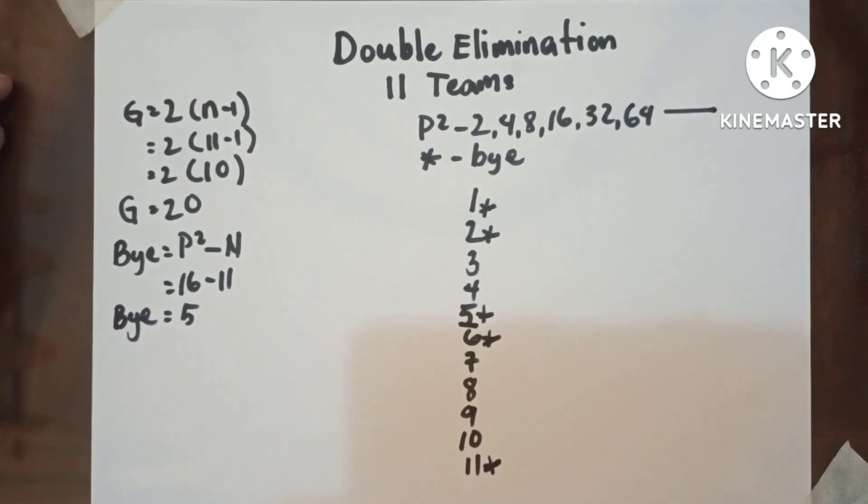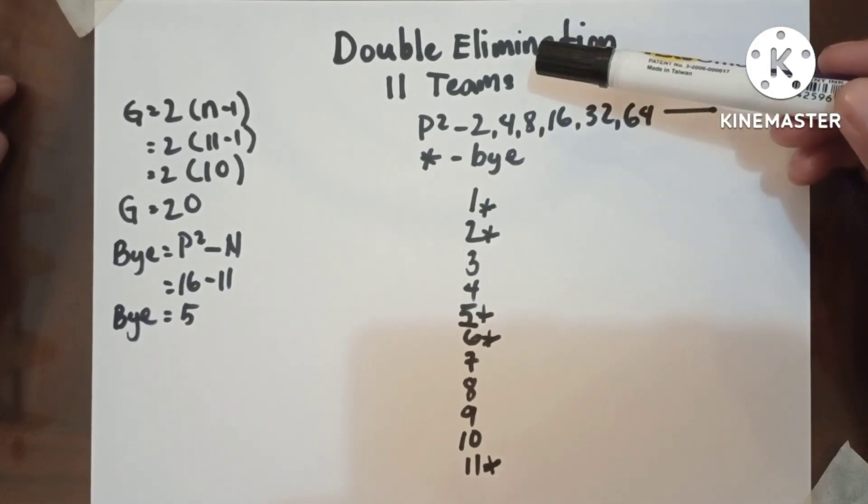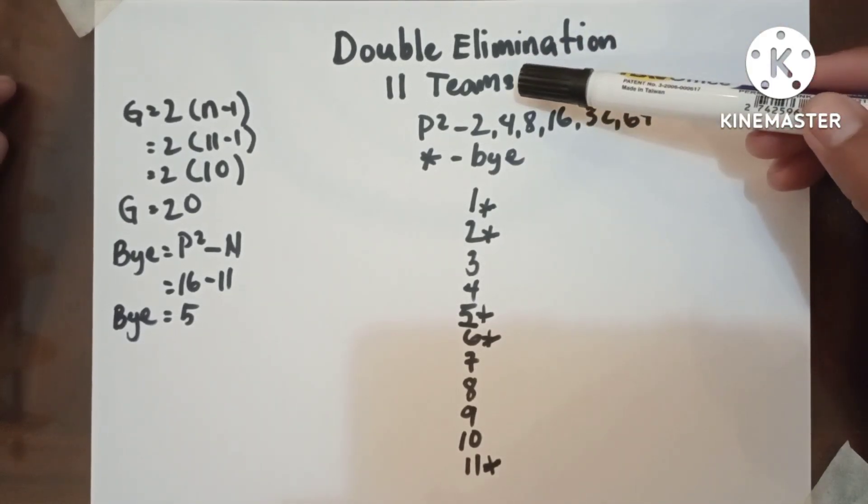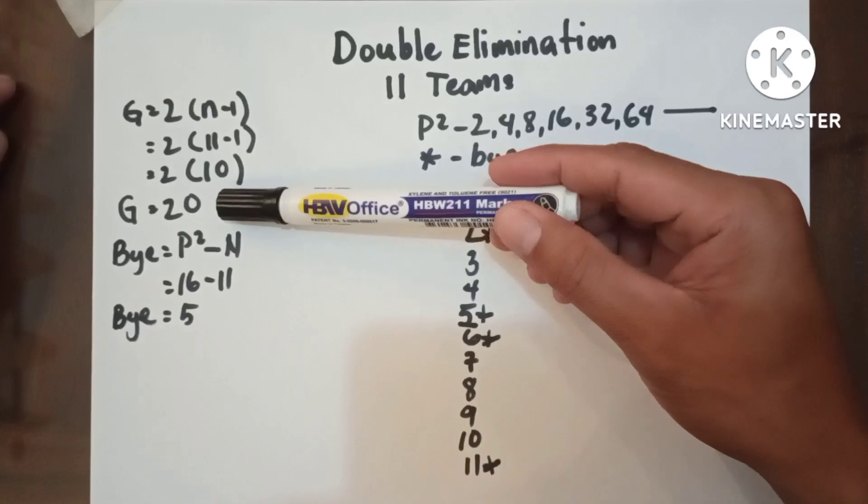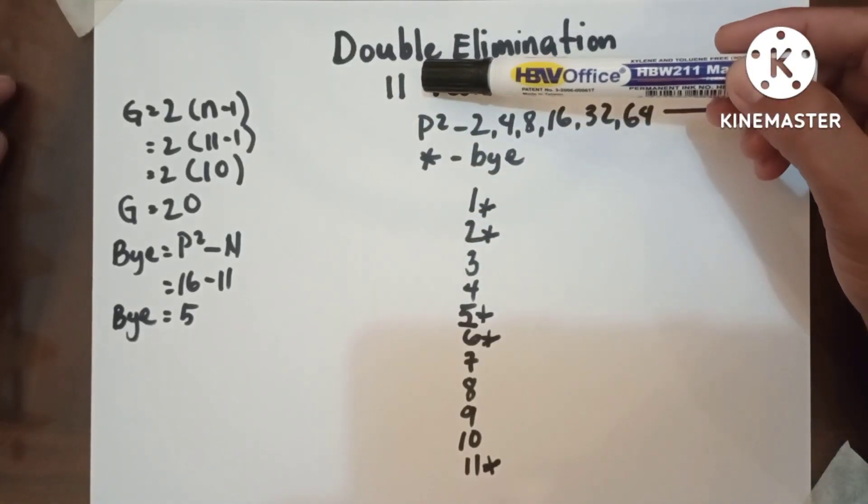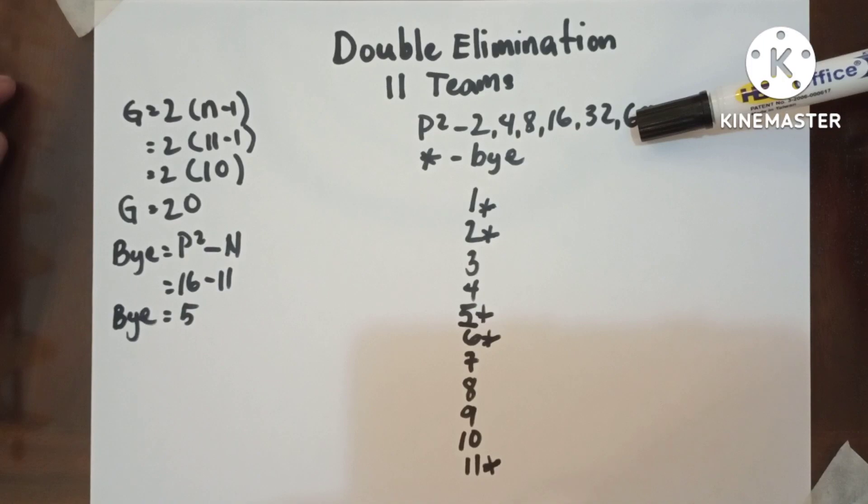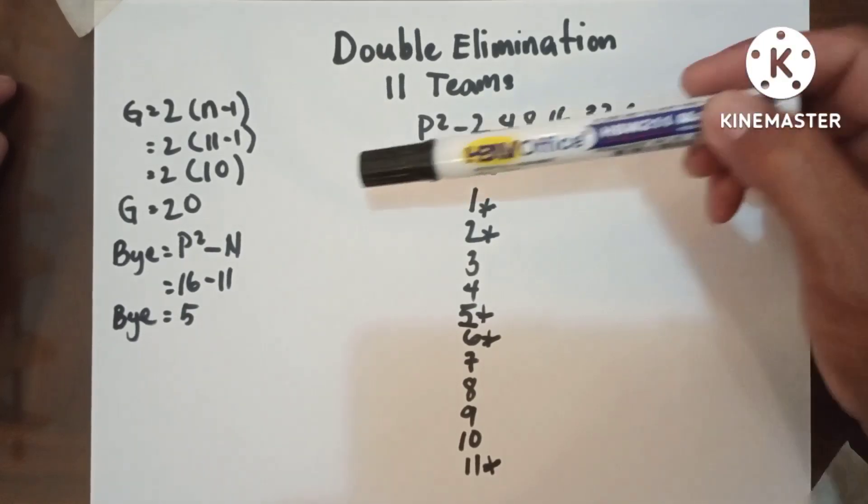Hello everyone, this is double elimination in 11 teams, or 11 number of entries. In 11 teams we have 20 games, and since 11 is not included in the powers of 2, meaning it has byes, and to determine the byes...